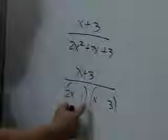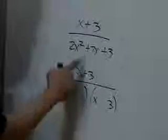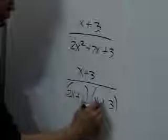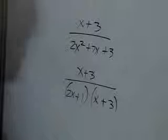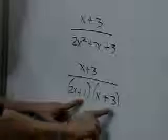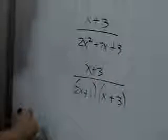This is positive 3, so the signs must be the same. And since this is positive 7, those signs should both be positive. We check 2x squared, 6x plus x is 7x, and 1 and 3 gives 3.